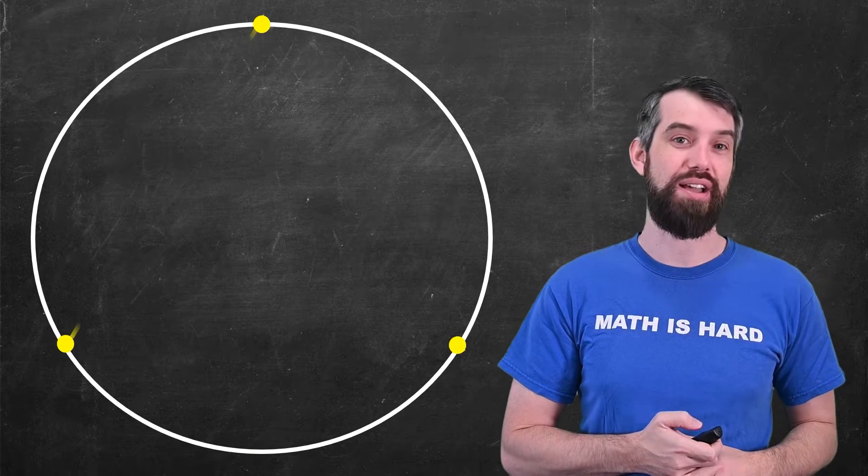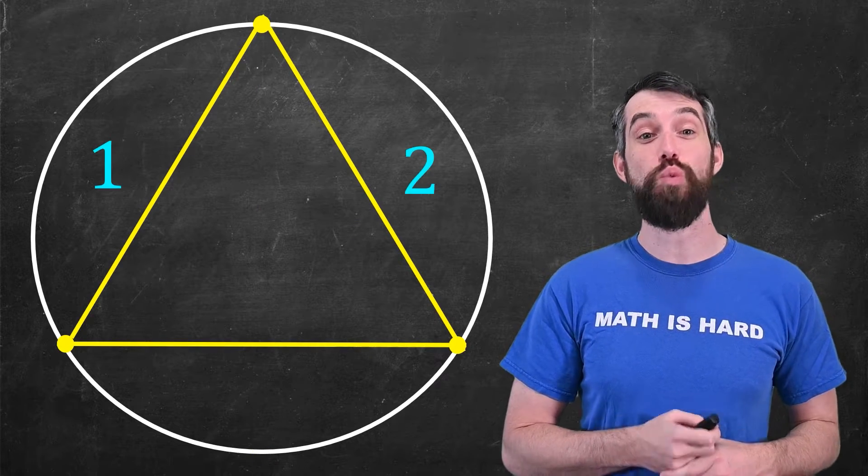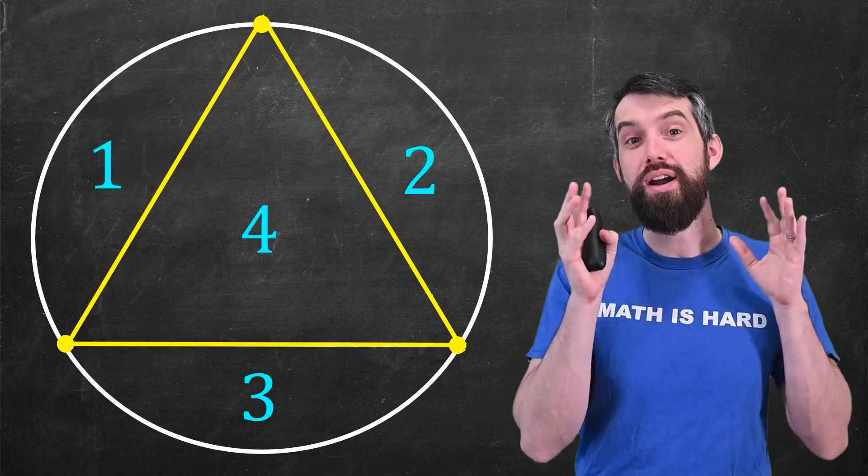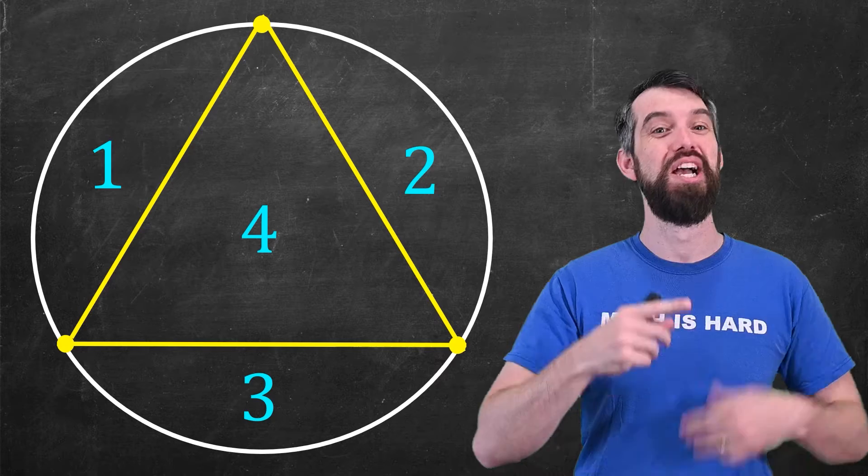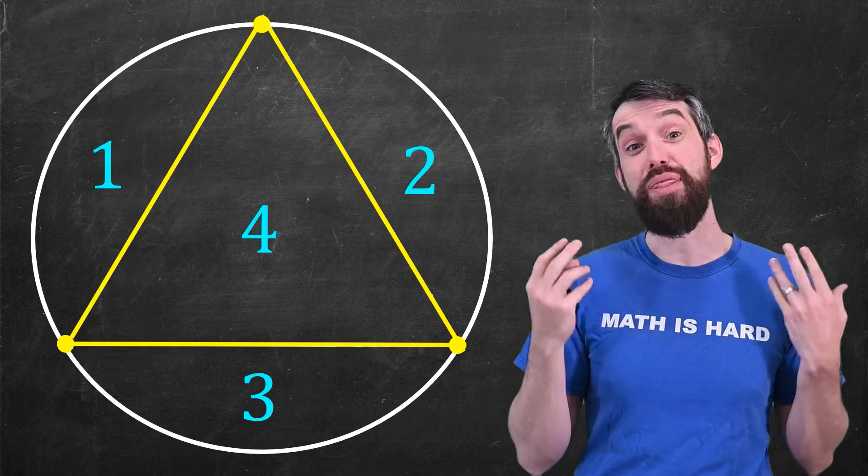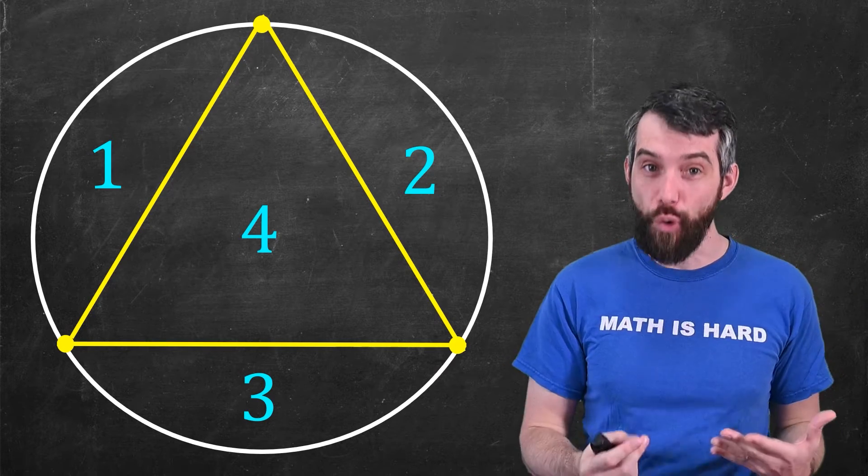The idea here is I'm going to be taking different numbers of dots, connecting those dots up, and asking how many regions in the circle are created. For example, with three dots here, I'll connect the three dots up. This creates one, two, three, four different regions. So with one dot there was one region, two dots gave us two regions, and three dots give us four regions.